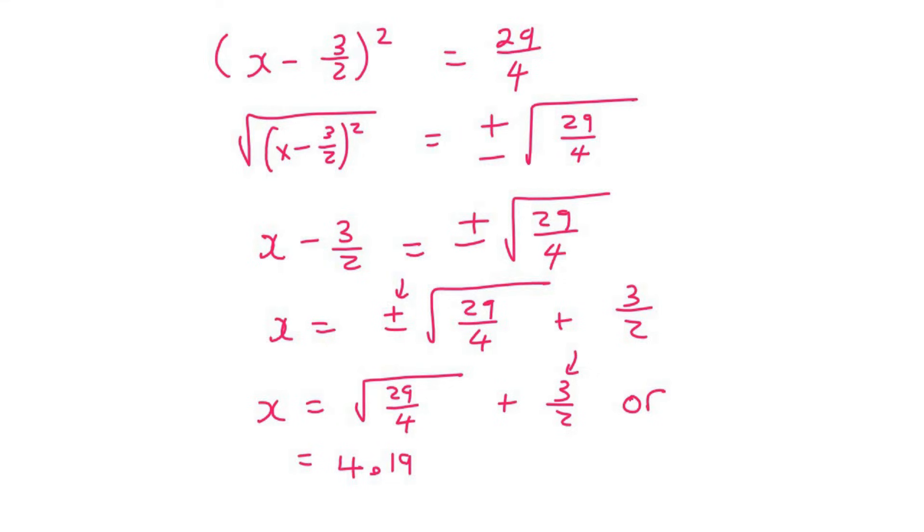Or now we're going to use the minus. So that's going to be minus square root of 29 over 4 plus 3 over 2. And that will give us negative 1.19. And so those are the two answers for this question.